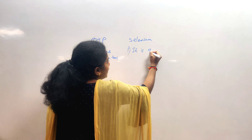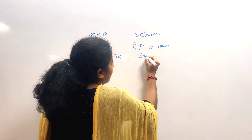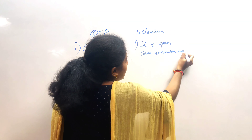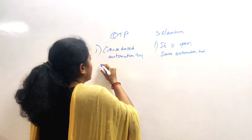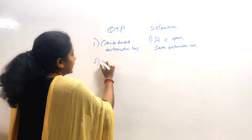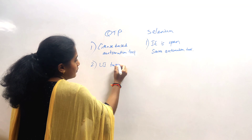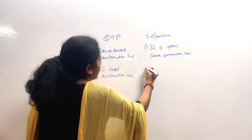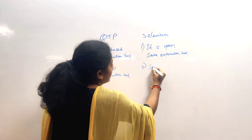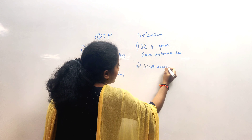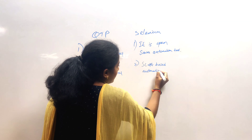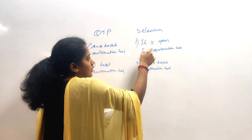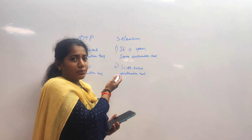Looking at the differences: QTP is a license-based automation tool, while Selenium is an open source automation tool — meaning it is available to all users. QTP is a UI-based automation tool, whereas Selenium is a script-based automation tool. Because of these advantages, we are going for Selenium.